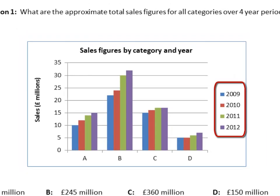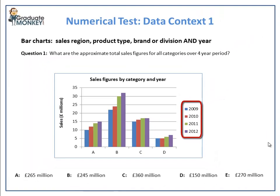The question reads: what are the approximate total sales figures for all categories over the four year period?